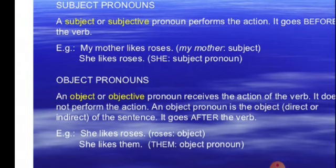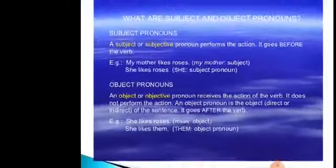Object pronouns. The object is the receiver of the action. So when I say my mother likes roses, my mother is the subject pronoun — I can say 'she.' She likes what? The object that follows the verb is roses. So look at the example: she likes roses → she likes them. So 'them' is the object pronoun because it goes after the verb.